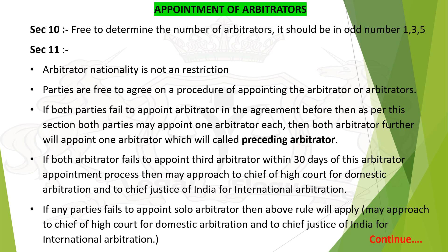The next topic is conciliation — Sections 61 to 81. Definition: both parties with their consent solve the dispute with the help of a neutral third person — that is called conciliation. Scope of conciliation: commercial transactions only, and it can be used within and outside India, meaning it can be used globally. Commencement of conciliation proceedings: a written invitation is sent to the other party with a brief of the case. Proceedings start when the other party accepts the invitation in writing. If the other party does not reply within 30 days, conciliation will not be valid. The conciliator can only assist both parties.